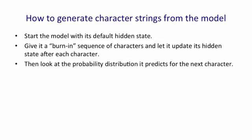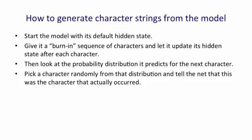Then we let it start predicting. We look at the probability distribution it predicts for the next character. We pick a character randomly from that distribution. So if it predicts that the probability of a Q is 1 in 1,000, we pick Q one time in 1,000.